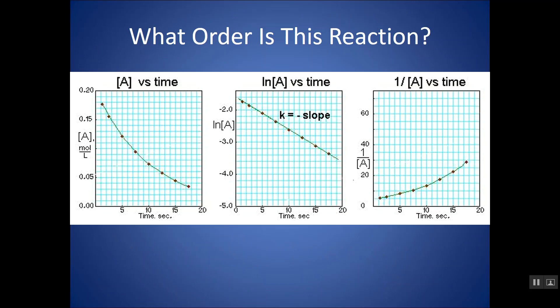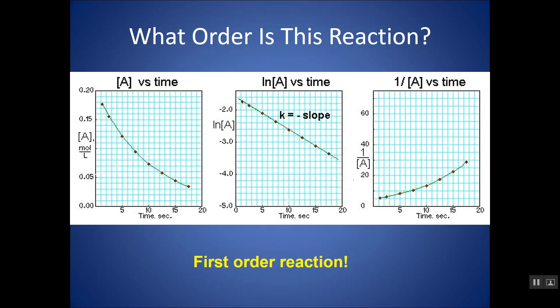So what might you see? You could see graphs made — here's a graph of concentration versus time for a given reactant, then natural log versus time, and 1 over concentration versus time. What is the order of this reaction? Notice only one of the plots is really going to fit a straight line best. In this case, natural log of A versus time fits a straight line best, so this would be a first-order reaction. From this characteristic plot, I can also find the slope, and that would give me the rate constant.